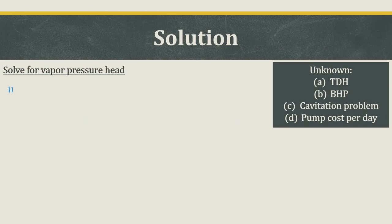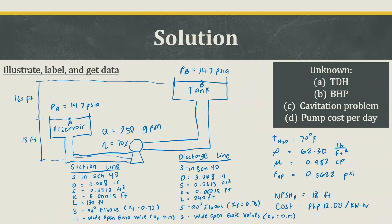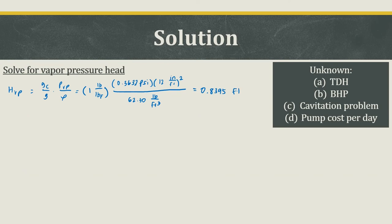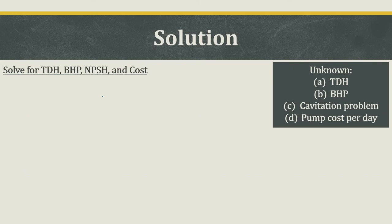We now solve for the vapor pressure head HVP, which equals (Gc/G) times the vapor pressure divided by the density. The vapor pressure is 0.3632 psi, converted to lbf/ft² by multiplying by 144, then divided by the density of 62.30 lb/ft³. This gives HVP = 0.8395 feet.